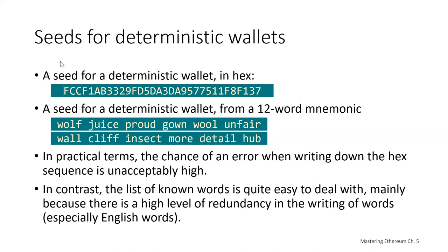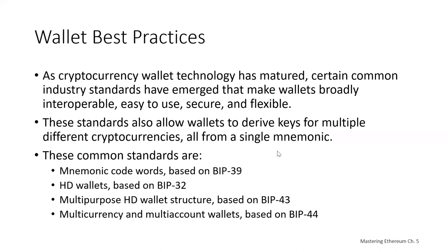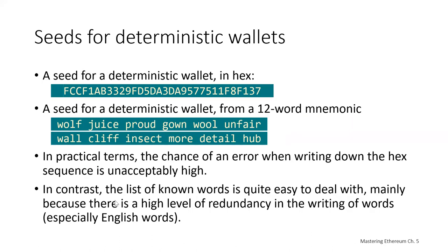In practical terms, if you were to write down the hexadecimal seed, there's a high chance of getting something wrong, whereas this list of words has very low odds of error. You should always write down your backup — no one wants to memorize a seed — but avoid digital backups. Don't store it in a file or photograph it. Your backup should be on paper, somewhere safe.